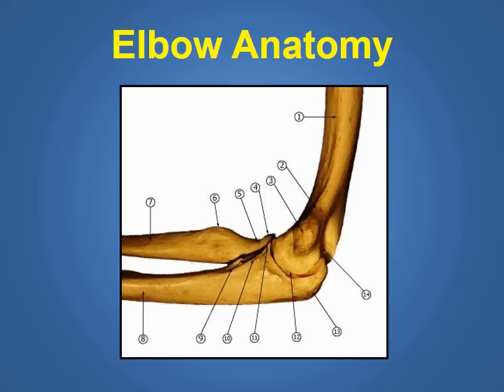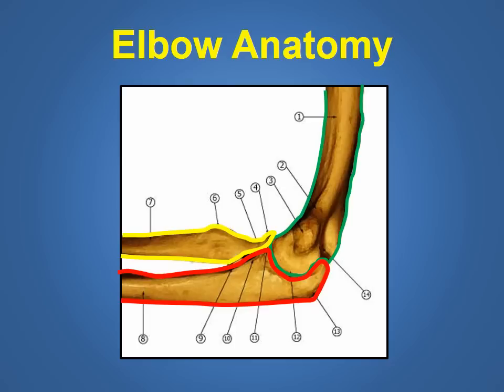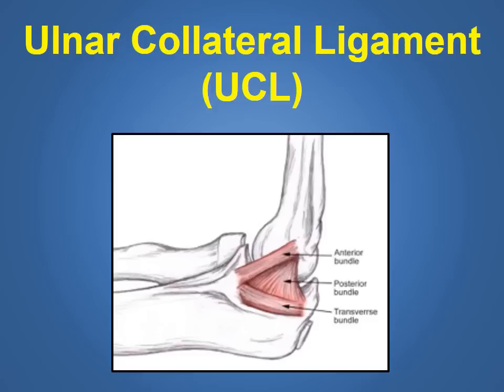This slide shows a side view of the elbow joint looking at the inside portion of the elbow. Again the humerus is marked by the green outline, the ulna is marked by the red outline, and the radius is marked by the yellow outline. The ulnar collateral ligament or UCL is the main stabilizing structure on the inside portion of the elbow joint. It connects the humerus or upper arm bone to the ulna of the forearm.